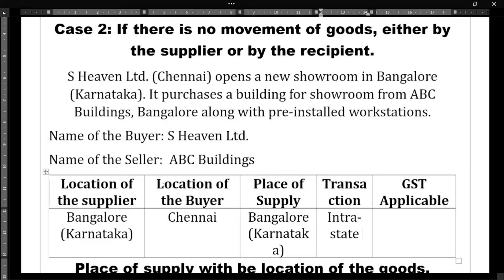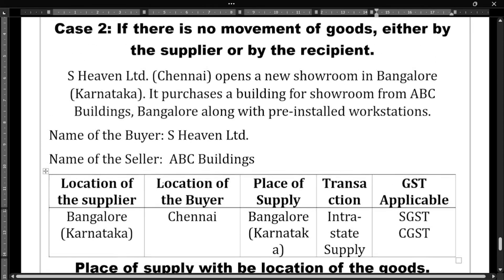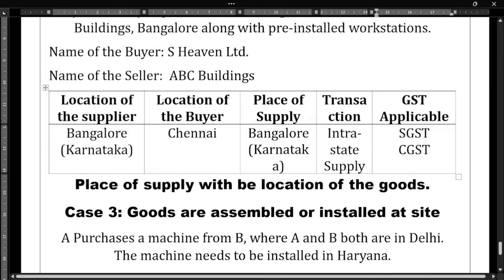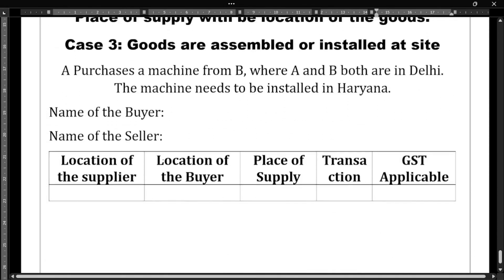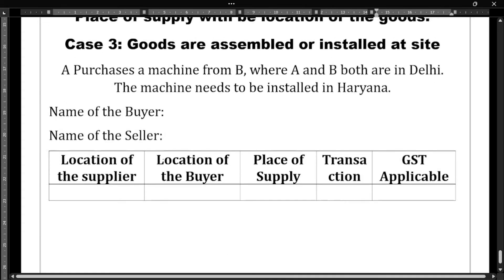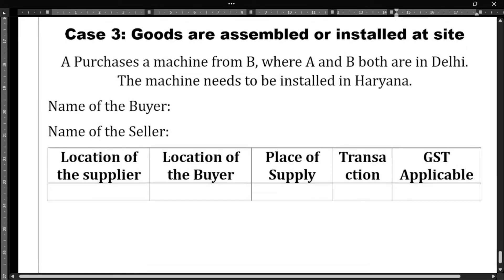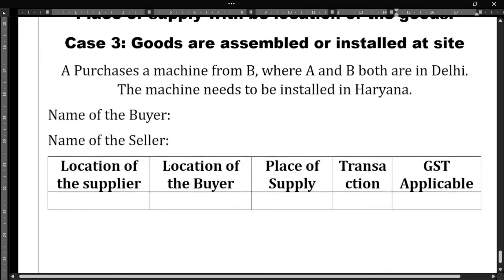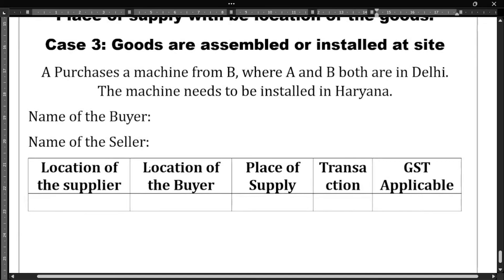Intrastate supply will attract SGST and CGST. This is Case Number 2. Now we have Case Number 3: goods are assembled or installed at a site. Let us see how to determine the place of supply in such a case.